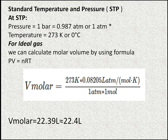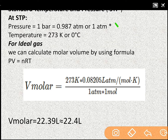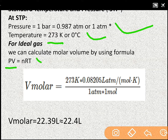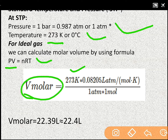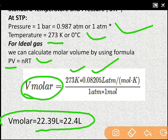At STP, pressure is 1 bar or 1 atmospheric pressure and temperature is 273 Kelvin or 0 degree Celsius. We can calculate the volume by using the formula PV is equal to nRT. After putting all these values, we will get 22.39 or 22.4 litre.